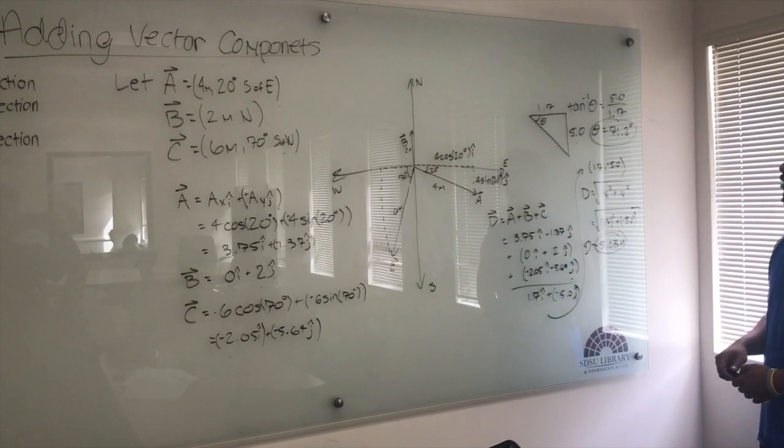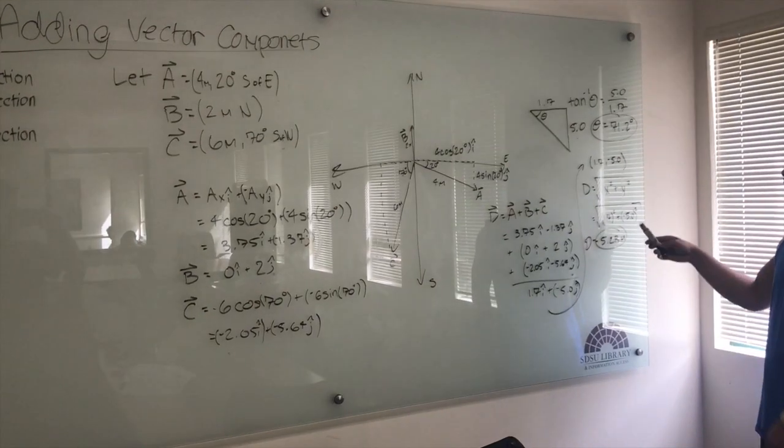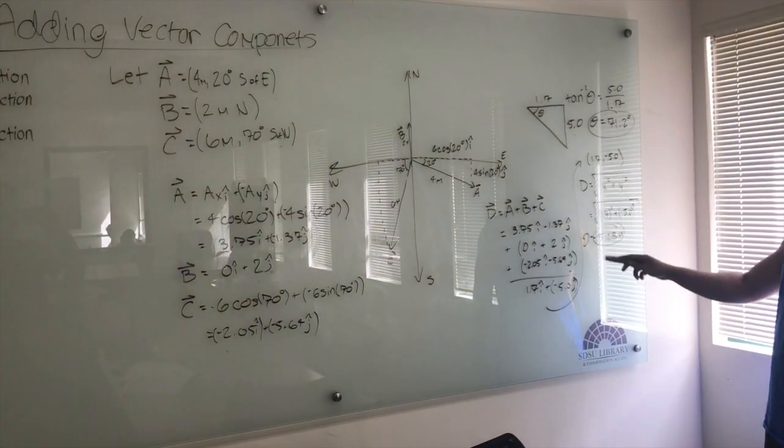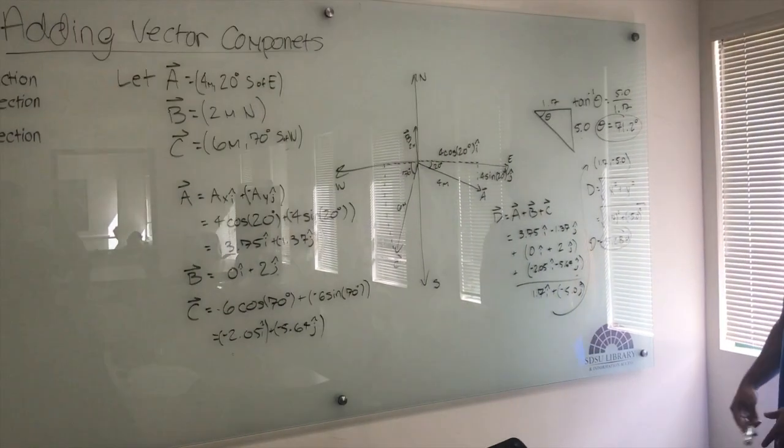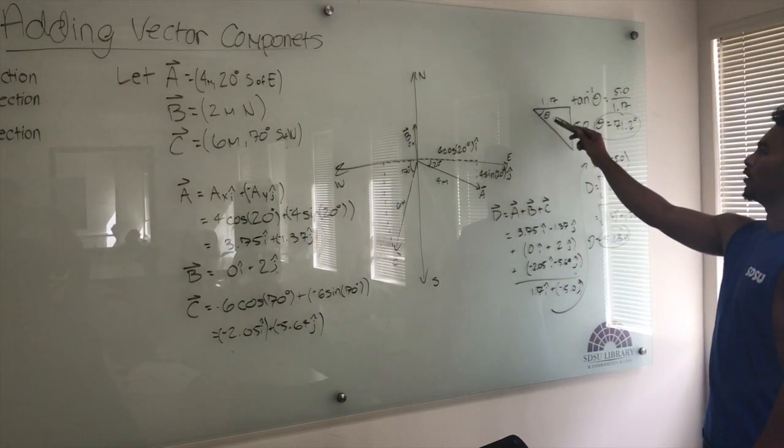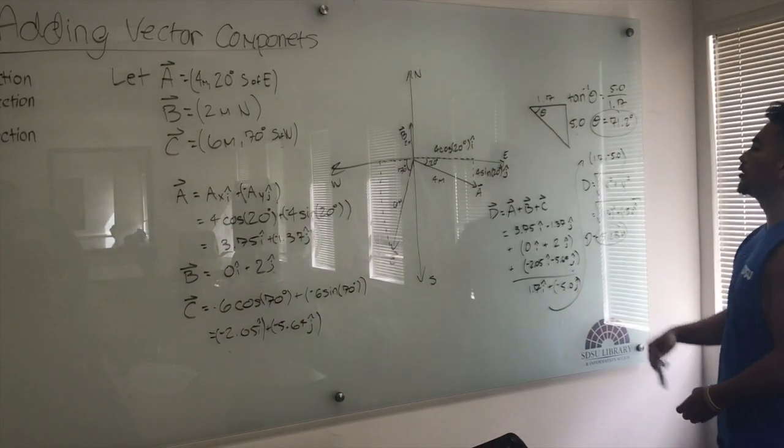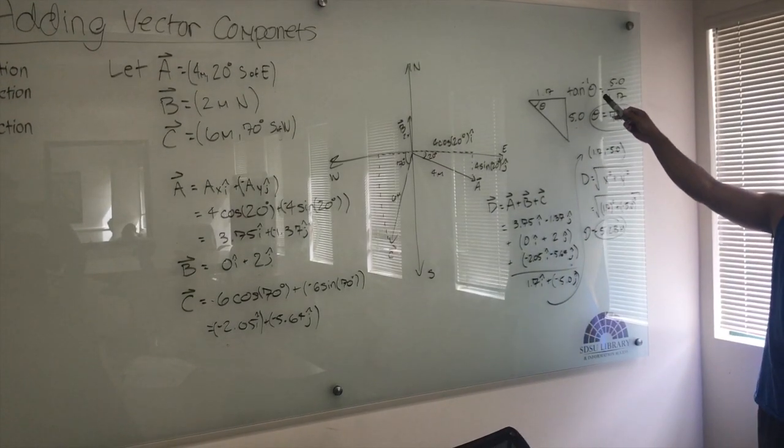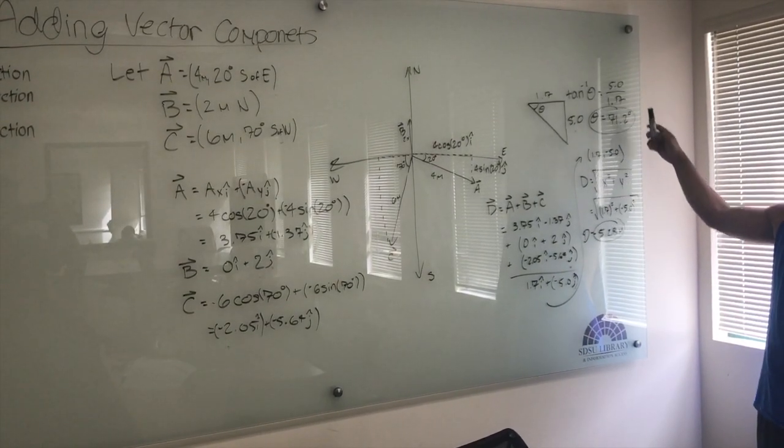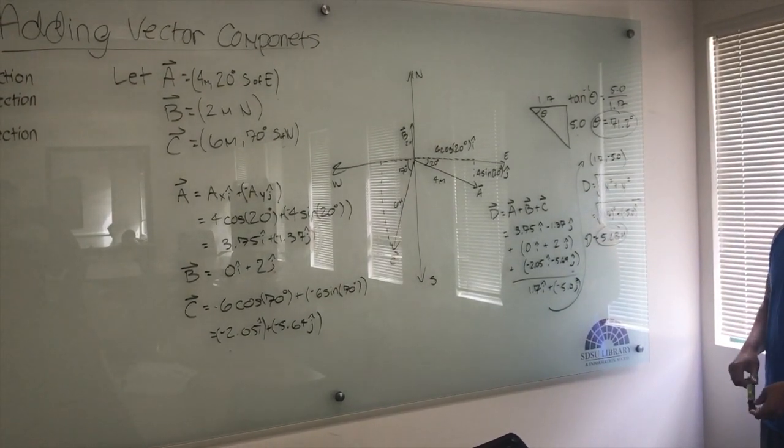So you plug and chug and you get 5.28 meters. In order to find the angle of vector d, you must plug and chug into tan inverse theta, in order to get 71.2 degrees.